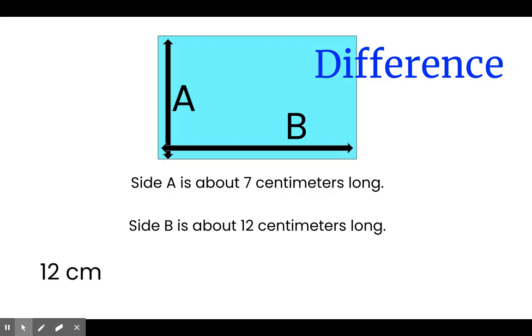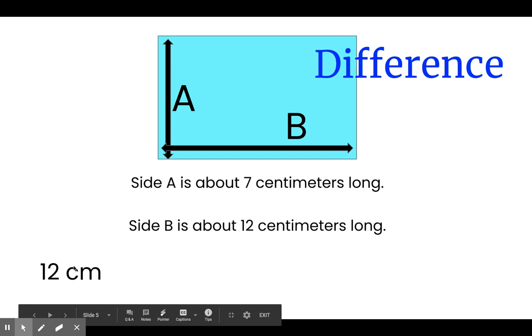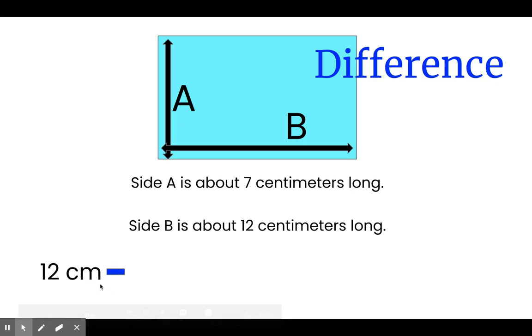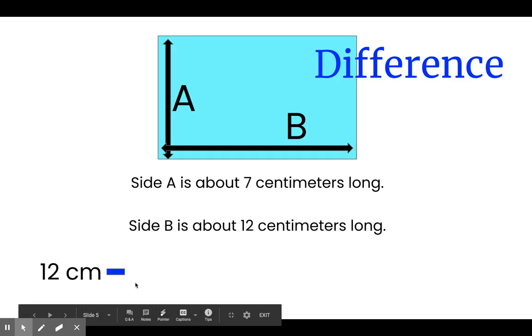Let's take the longest side first. 12 centimeters. That's side B. You may notice I use the letters CM. CM is short for centimeters. It's an abbreviation. It's a much shorter and quicker way to write centimeters than writing out the entire word. We'll use centimeters right here as an abbreviation. CM. 12 centimeters. Now remember, we're finding the difference, so we need to subtract the shortest side, which was side A, and it was 7 centimeters. 7 CM.